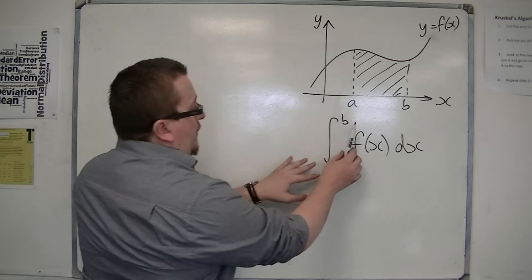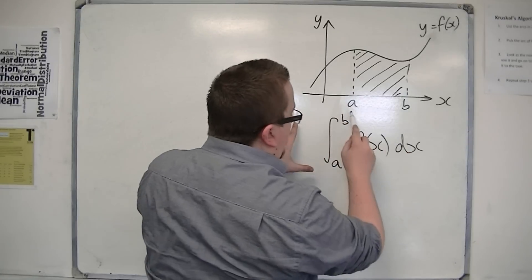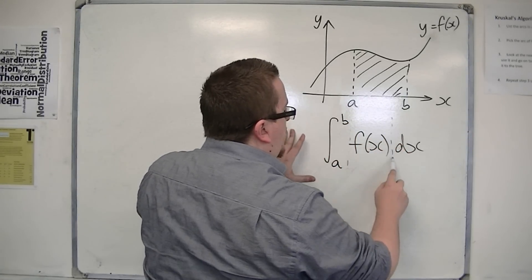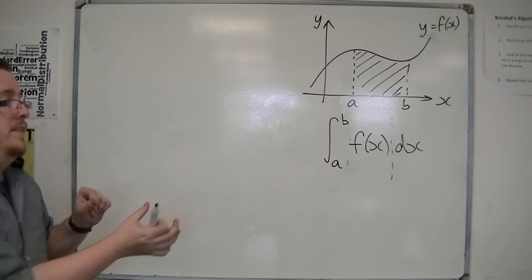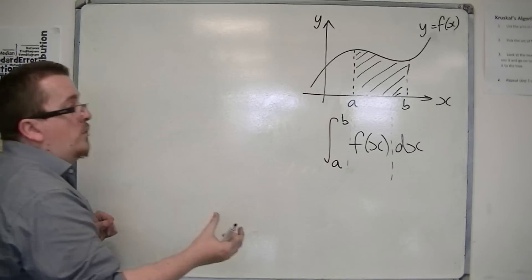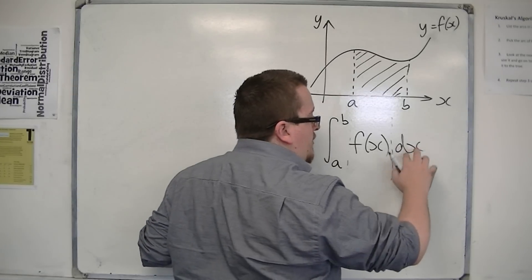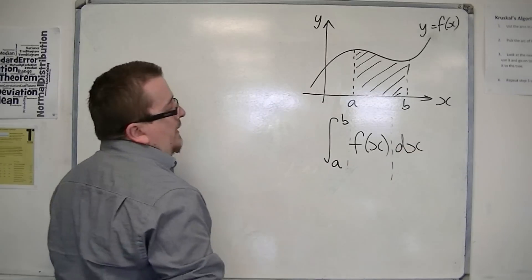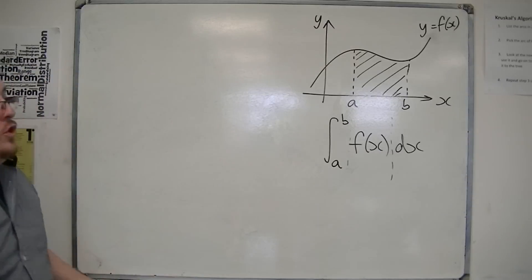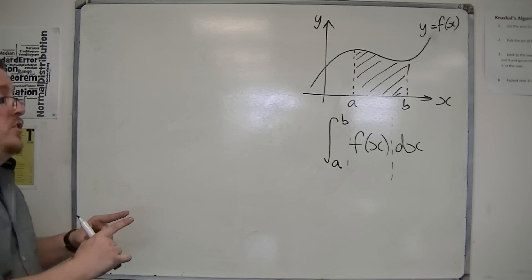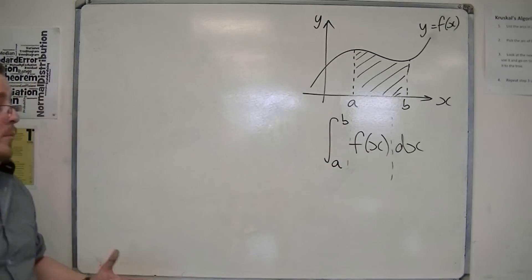This symbol here, this elongated s, and this dx are effectively bookends — they must be there. The dx tells you what you are integrating by, so the variable — integrating with respect to x. And the integral symbol tells you the two values that you are integrating between. The smaller value goes on the bottom and the larger value on the top.